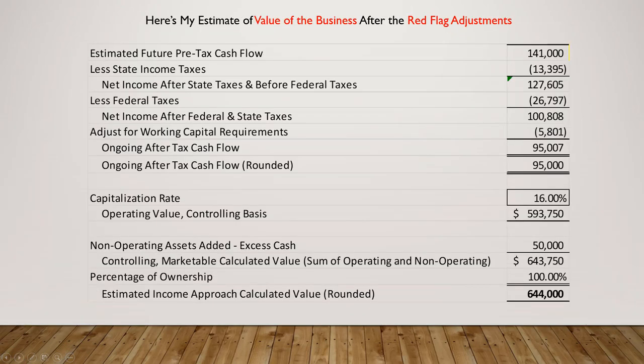Here's my estimate of the value of the business. Starting with $141,000 of adjusted income, we remove income taxes and working capital requirements. The estimate for ongoing after-tax cash flow is $95,000. Using a 16% capitalization rate gives a value of just under $594,000 before adding the excess cash. Adding the $50,000 of excess cash brings us to a total business value of $644,000 — not a small number.